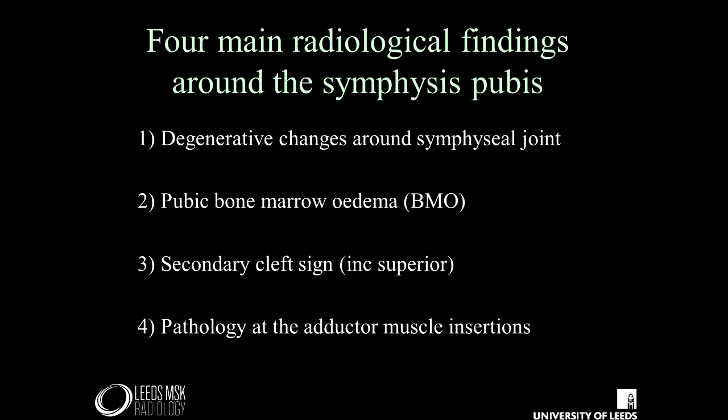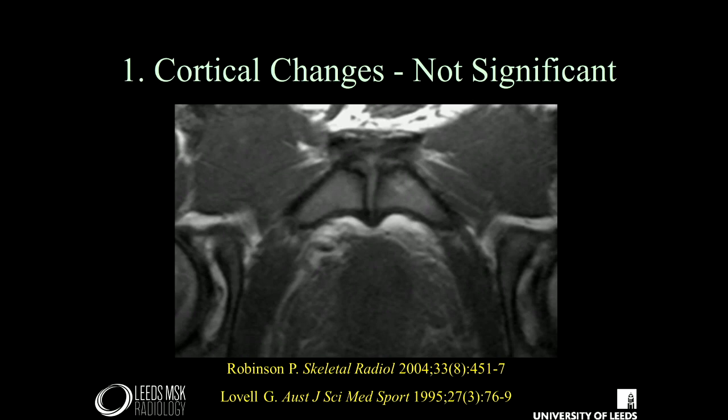When we look at imaging studies, there are four main radiological findings defined around the symphysis pubis: degenerative changes around the symphyseal joint, pubic bone marrow edema, cleft signs, and pathology around the adductor muscle insertions. Cortical changes around the symphysis pubis can be due to normal remodeling — spurring and irregularity around the apophysis — and usually these features are not significant; you can see them in asymptomatic individuals and in normal aging.